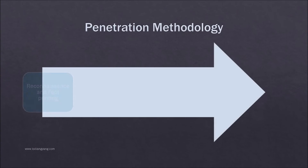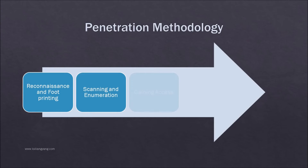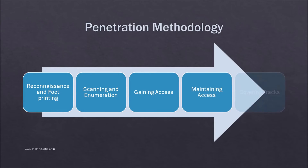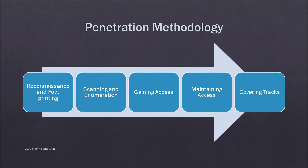In an APT, the attack begins with reconnaissance and footprinting, which refers to passive information gathering to uncover information about the organization through the web. Scanning and enumeration is an active form of information gathering, like port scanning and ping sweep, to get an idea of the network infrastructure in a target organization. Gaining access refers to exploitation of vulnerabilities within systems, or gaining any form of unauthorized access through other means like phishing.